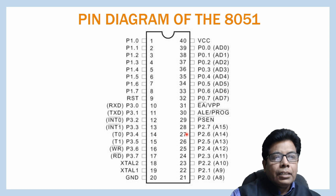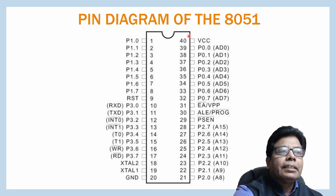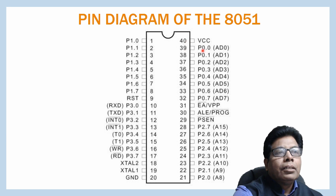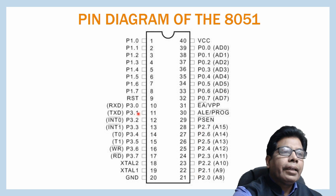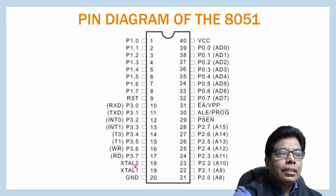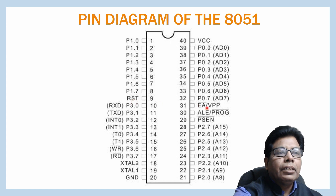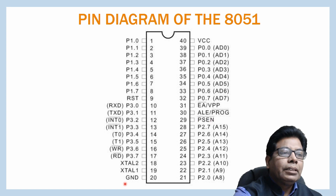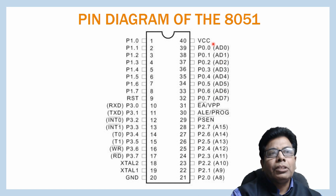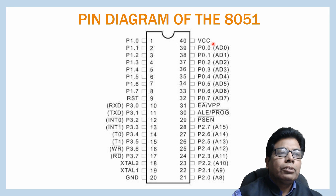As you can see here, this is the dual-in-line package — 20 pins on this side and 20 pins on this side. We have 8 pins for port 0, then 8 pins for port 1, then again 8 pins for port 2 and 8 pins for port 3 with alternate functions. Then two pins for the external crystal connection, the reset pin, EA bar external access pin, PSEN pin, and ground and VCC. This makes the 40 pins for the 8051. We will discuss the functions of all the pins in detail.